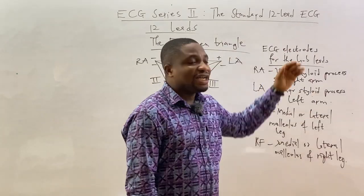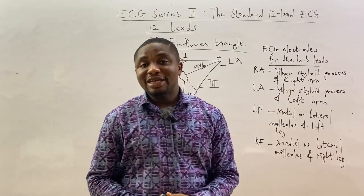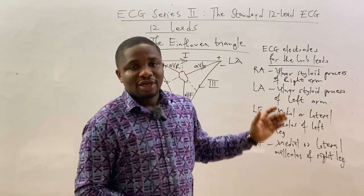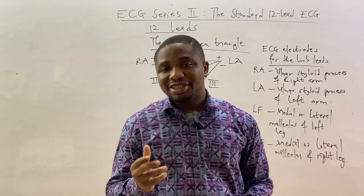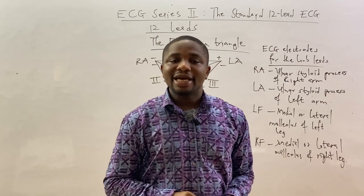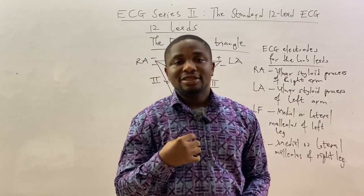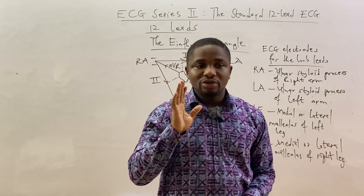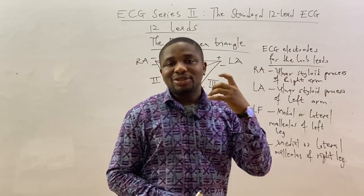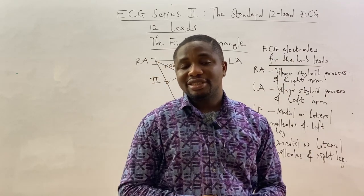Before discussing electrode positions for the limb leads, you should know that even though we are talking about a standard 12-lead ECG, those 12 leads are obtained from only 10 ECG electrodes. Ten electrodes attached to the skin give us 12 ECG leads. We will first discuss the four electrodes that give us the six limb leads.